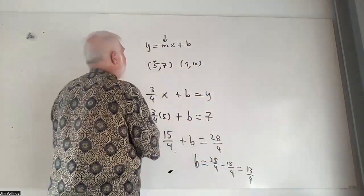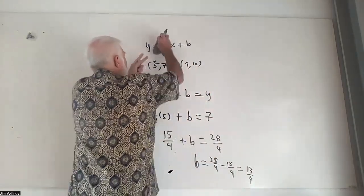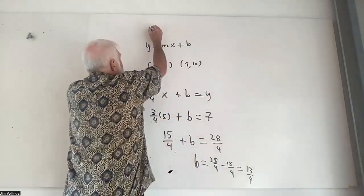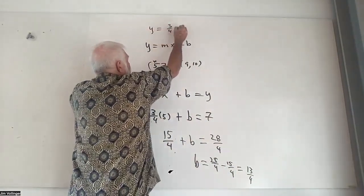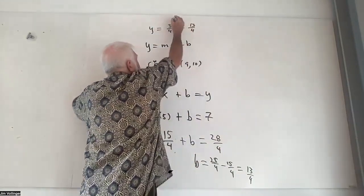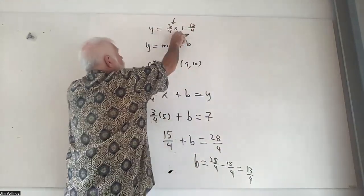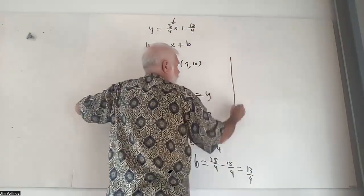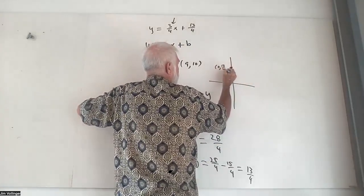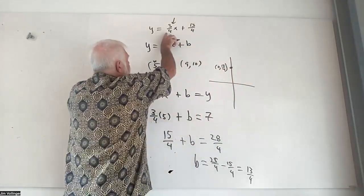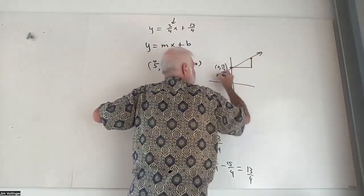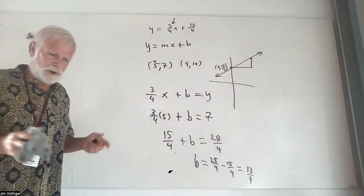So therefore I now have the equation Y equals three-fourths X plus 13 fourths. This is the product — what makes that product zero is plugging in zero for X. And I'm up at 13 fourths, a little bit more than 3. I'm going over 4 units and up 3. That's the typical way this is taught.